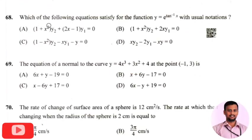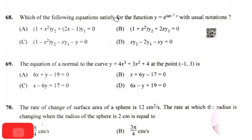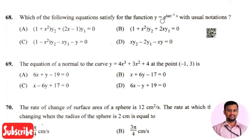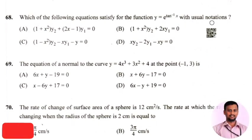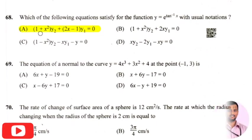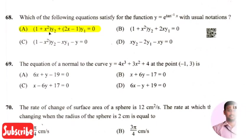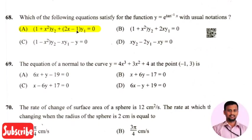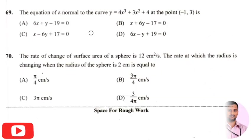The next question: which of the following equations satisfies the function y equals e raised to tan inverse x, with the usual notations? The right answer is option 1, that is (1 plus x squared) times y2 plus (2x minus 1) times y1 equals 0.